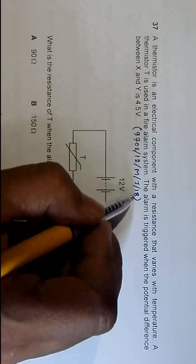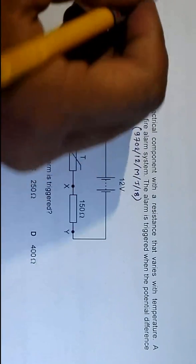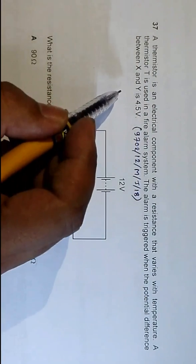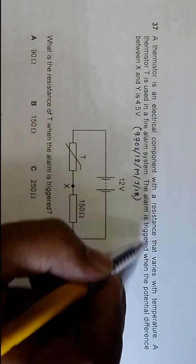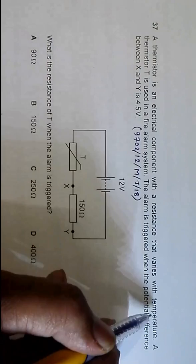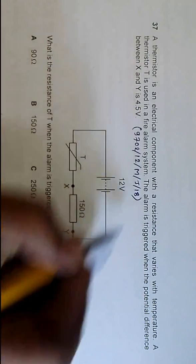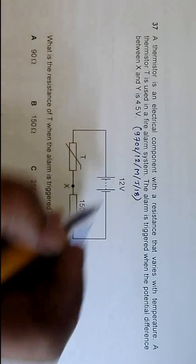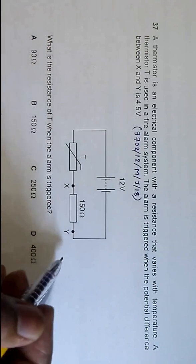The question is from 2018 Paper 1, question number 37. It states that a thermistor is an electrical component with a resistance that varies with temperature. A thermistor T is used in a fire alarm system. The alarm is triggered when the potential difference between X and Y is 4.5 volts.